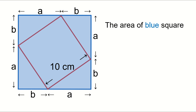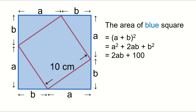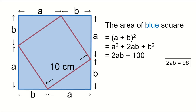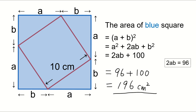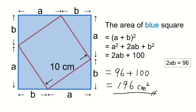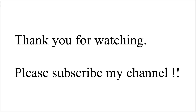Now we can get the area of the blue square. The area of the blue square is 2AB plus 100, and 2AB equals 96. So this equals 96 plus 100, equals 196 square centimeters. We get the same answer as the previous video. In this video, we solved a geometry problem algebraically. Thank you for watching.